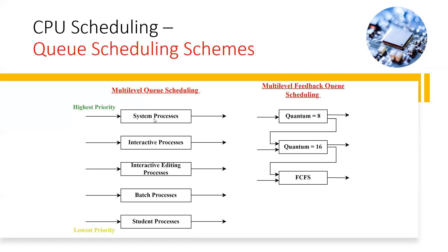If we look at Multilevel Queue Scheduling, the system processes are the highest priority. Then interactive processes, then interactive editing processes, and so on — with batch and other processes having the least or lowest priority. So this is a priority order: according to the type and category of processes, we prioritize them and then schedule execution.